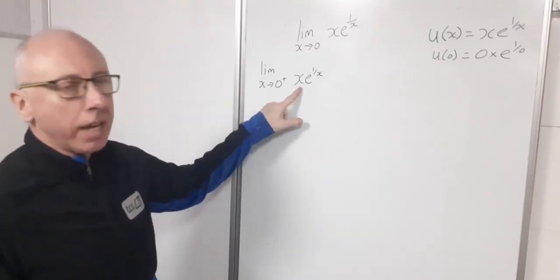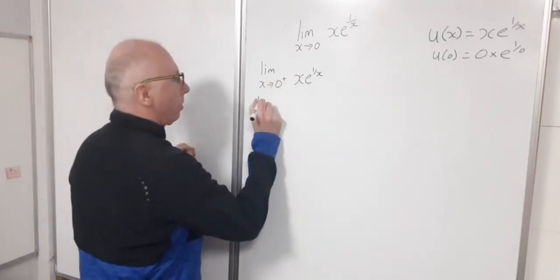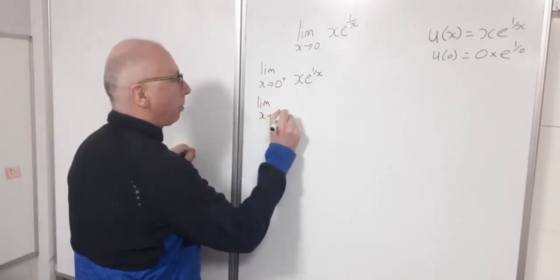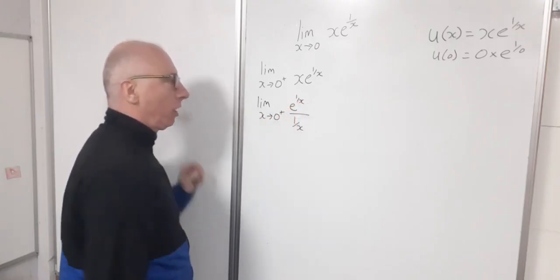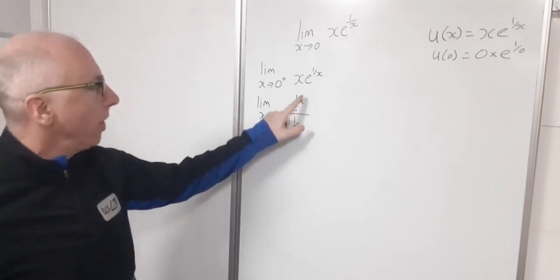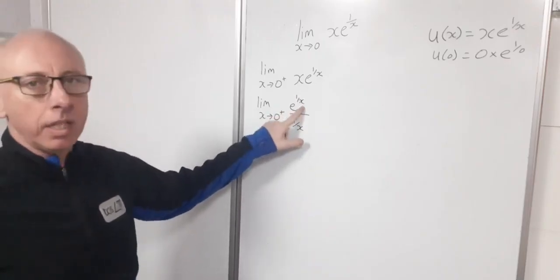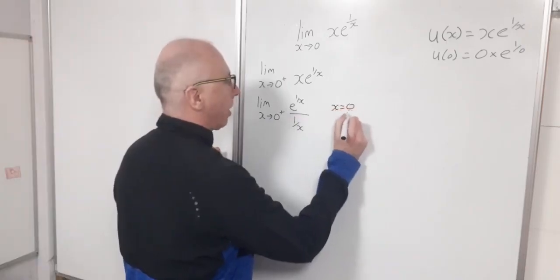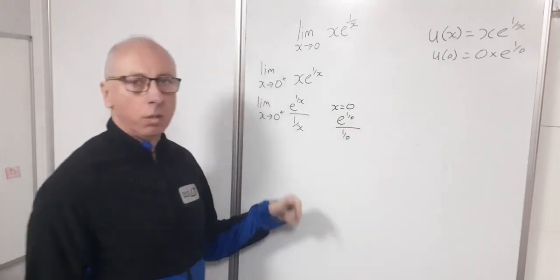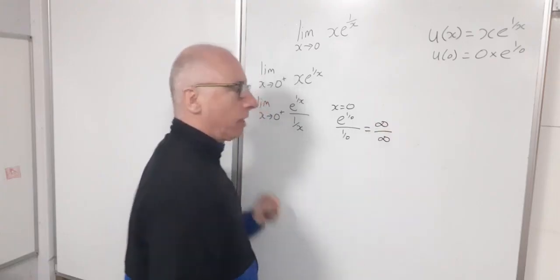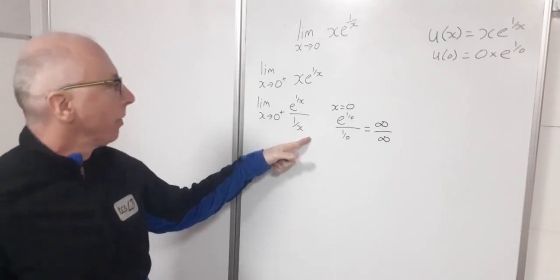If I put x in the denominator as 1 over x, I can rewrite the limit as x approaches 0 from the positive side of e^(1/x) divided by 1/x. That's handy — I've got 1/x in both numerator exponent and denominator. Plugging in x = 0 gives e^(1/0) divided by 1/0, which is infinity over infinity, so we're good to go with L'Hôpital's rule.